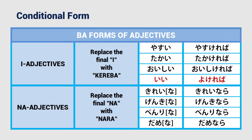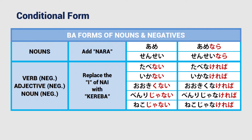For adjectives, replace the final ii with kereba for i-adjectives. Note that the adjective for 'good,' which is ii, conjugates to yokereba. For na adjectives, just replace na with nara, which is the contracted form of naraba. Nouns conjugate similarly to na adjectives, so ame becomes ame nara.